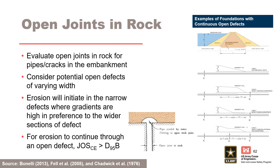Scour can also occur along continuous open rock defects in the foundation. The method for assessing the likelihood of initiation is just like for pipes and cracks in the embankment. For erosion to continue through an open defect, the joint opening size for a continuing erosion condition must be greater than the D95 of the adjacent soil. However, the hydraulic gradient may vary across the flow path in the foundation as the width of the open defects varies. Erosion will initiate in the narrow defects where gradients are highest, in preference to the wider sections of the defect.